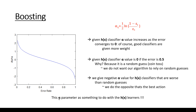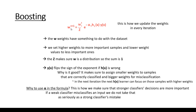The alpha parameter controls the weak learners, so alpha has something to do with the weak learners. Now, what about the weights? We are going to assign a weight W to every single sample in the data set, and in every iteration we have to update the weights associated with every single sample.